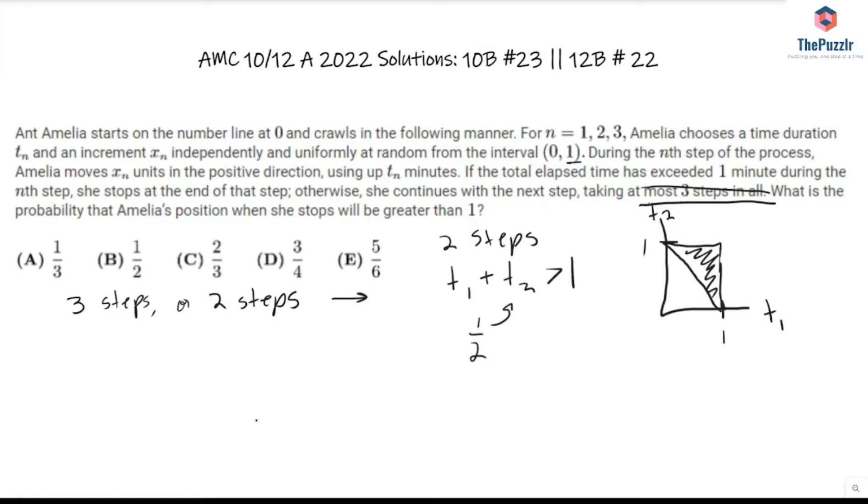Okay, so once t1 plus t2 is greater than one, what do we know now? Well, now we also know that our steps need to be greater than one. That's the probability we're trying to find. So x1 plus x2 is greater than one. What's the probability of that happening? Well, this is just the same problem as above, so it's just going to be one-half again. So with two steps, it's going to be one-half times one-half equals one-fourth chance that Amelia's position is going to be greater than one.